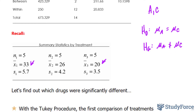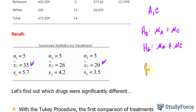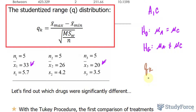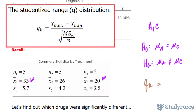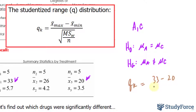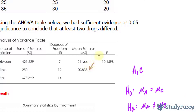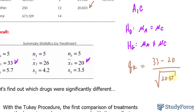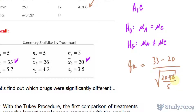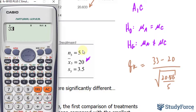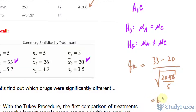The next step is to select a test statistic. We'll be finding Q sub K, which is found by taking the difference of the means — the largest minus the smallest — and dividing by the square root of the mean square within over the number of individuals in that group. So we take 33 minus 20, divided by the square root of 20.833 over 5. Plugging these into our calculator, we get 6.3687.